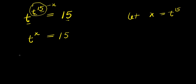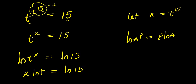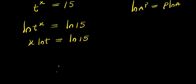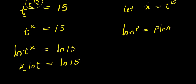From here I can apply natural log. I can have natural log of t^x equals natural log of 15. Now if you have natural log of a^b, that equals b times natural log of a. So this is x times natural log of t equals natural log of 15. Now here we have x and we have t, so we want a uniform variable.